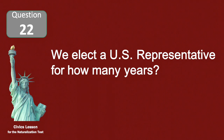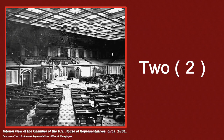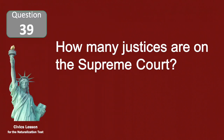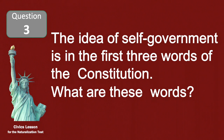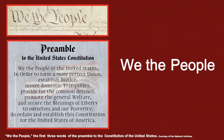We elect a U.S. representative for how many years? Two. How many justices are on the Supreme Court? Nine. The idea of self-government is in the first three words of the Constitution. What are these words? We the people.